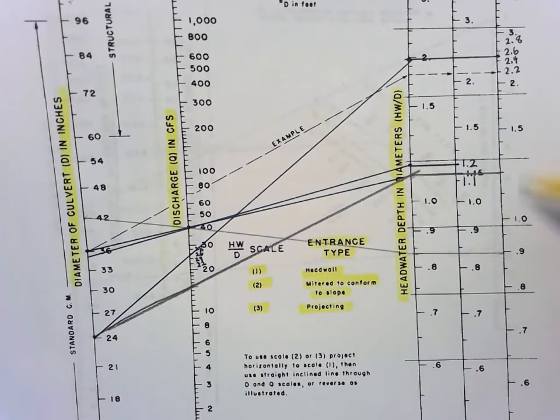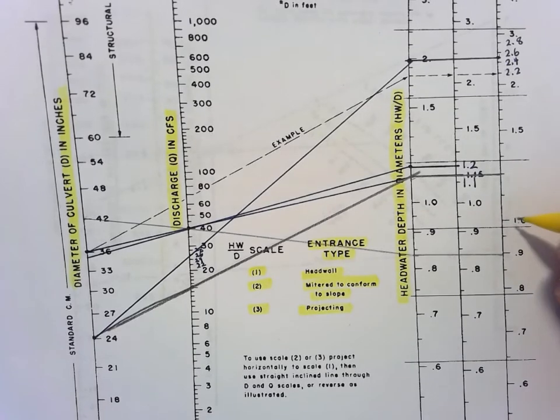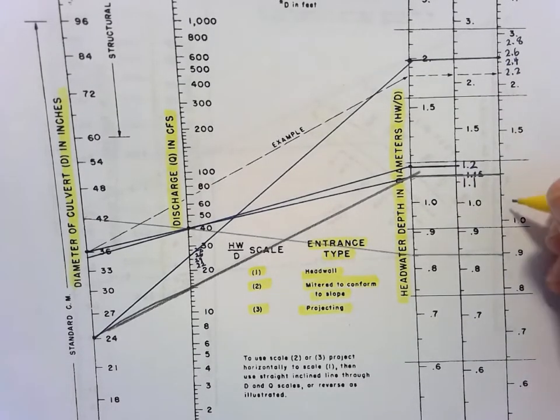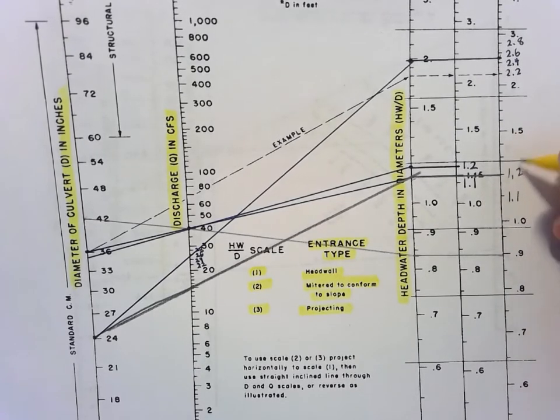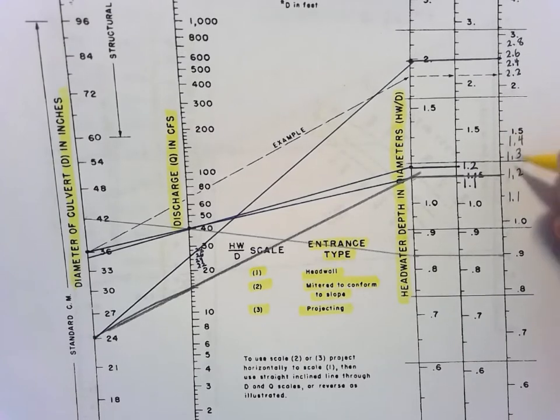Now remember, the scaling here is always different depending on which line. We need to be careful. This fits in right here. Here's 1.0, here's 1.5. So my scale is 1.1, 1.2, 1.3, 1.4, 1.5.